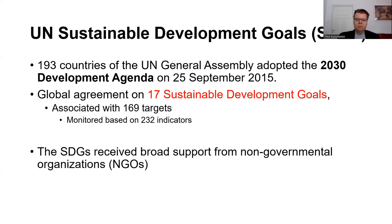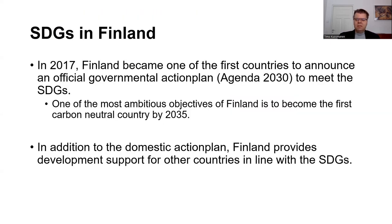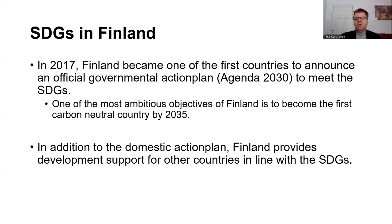These SDGs have also started to influence policy in practice. For example, here in Finland, already in 2017 the Finnish government announced an official action plan called Agenda 2030, outlining how the government aims to meet these 17 SDGs. As part of this Agenda 2030, Finland also announced that it aims to become the first country to reach carbon neutrality by the year 2035.